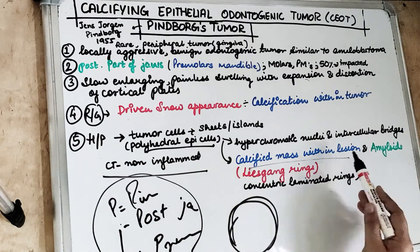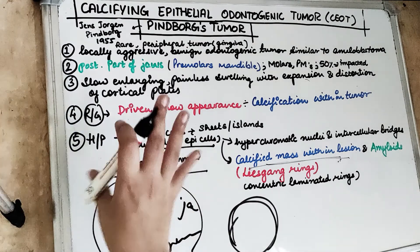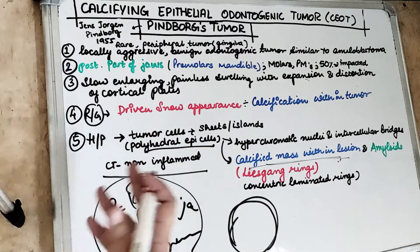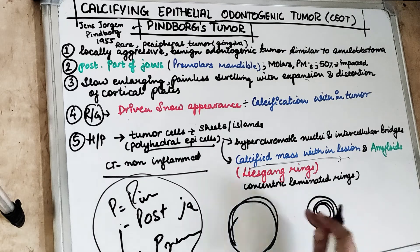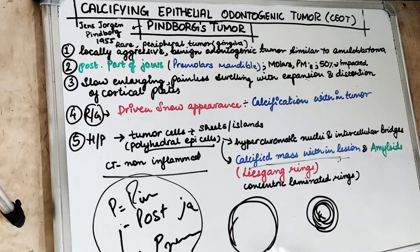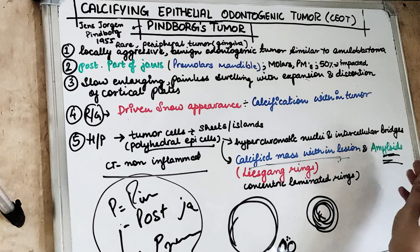The calcified masses present within the lesion are called Liesegang rings — concentric laminated rings of calcified material arranged around degenerated tumour cells. Additionally, amyloid is also present: a homogeneous hyaline material deposited between the tumour cells.